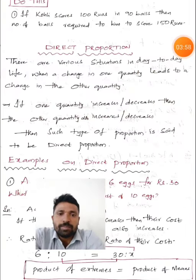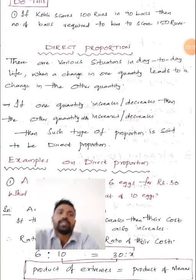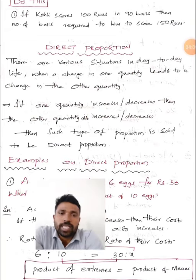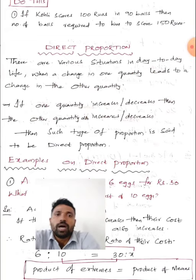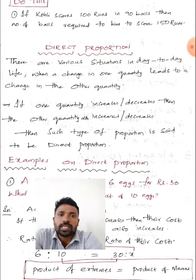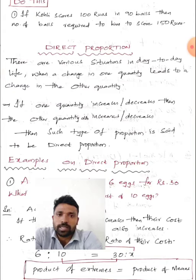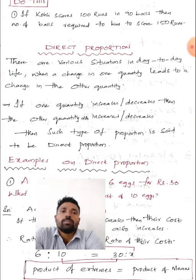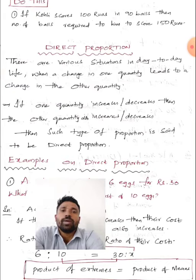Now it is time for assignment work. Using the unitary method, solve this problem: If Kaveli scores 100 runs in 90 balls, how many balls are required to score 150 runs? First find the value for one unit, then multiply with the required number of units.